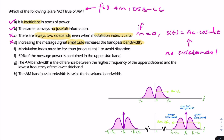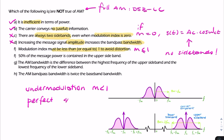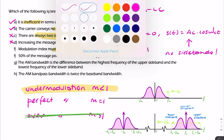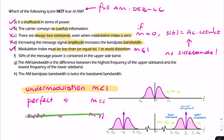Statement F says the modulation index must be less than or equal to 1 to avoid distortion. That's true — we have under-modulation where M is less than 1, perfect modulation where M equals 1, and over-modulation where M is greater than 1. Over-modulation is unacceptable; that's where distortion comes in, and generally we under-modulate. So statement F is true: the modulation index should be less than or equal to 1.